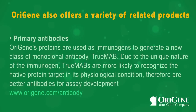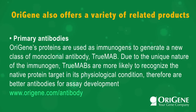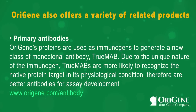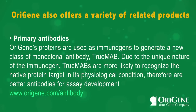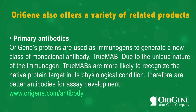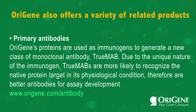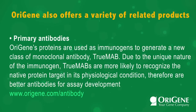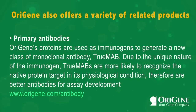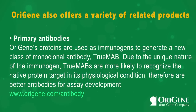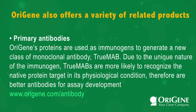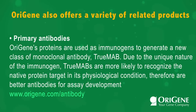Primary antibodies are another product offering. Orygene's proteins are used as immunogens to generate a new class of monoclonal antibody called TrueMab. Due to the unique nature of the immunogen, TrueMabs are more likely to recognize the native protein target in its physiological condition, making them better antibodies for assay development.